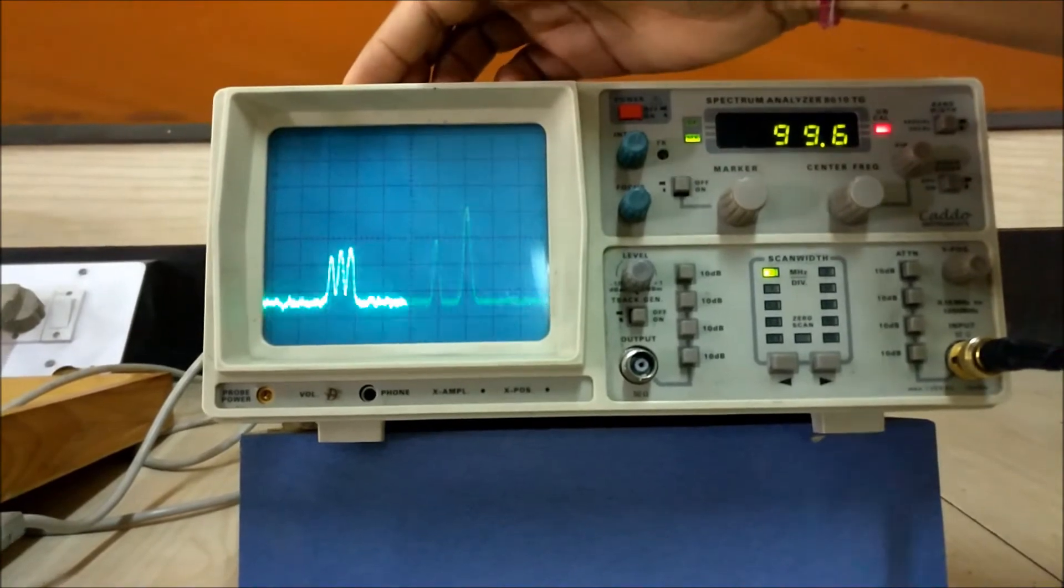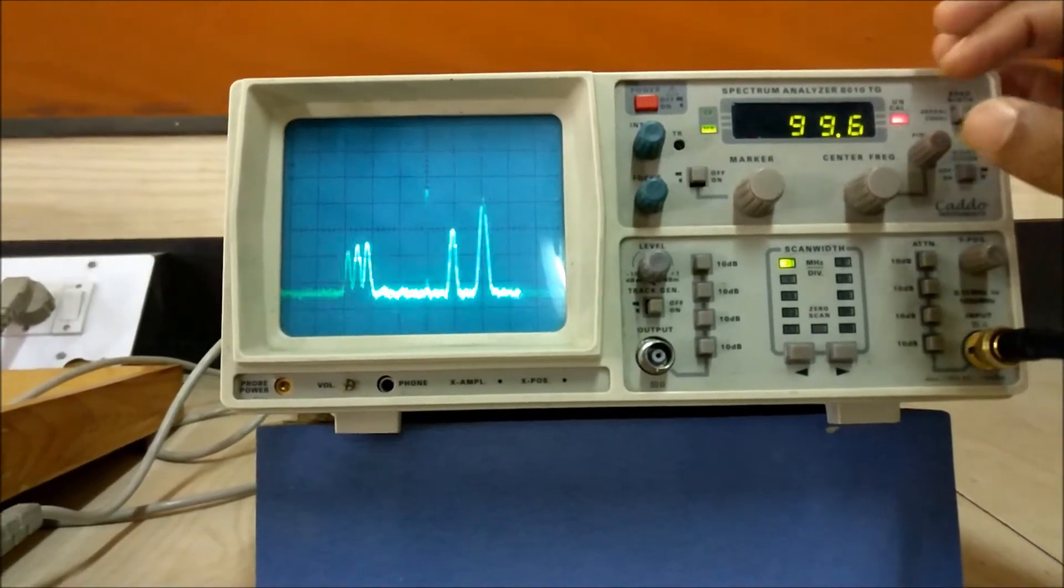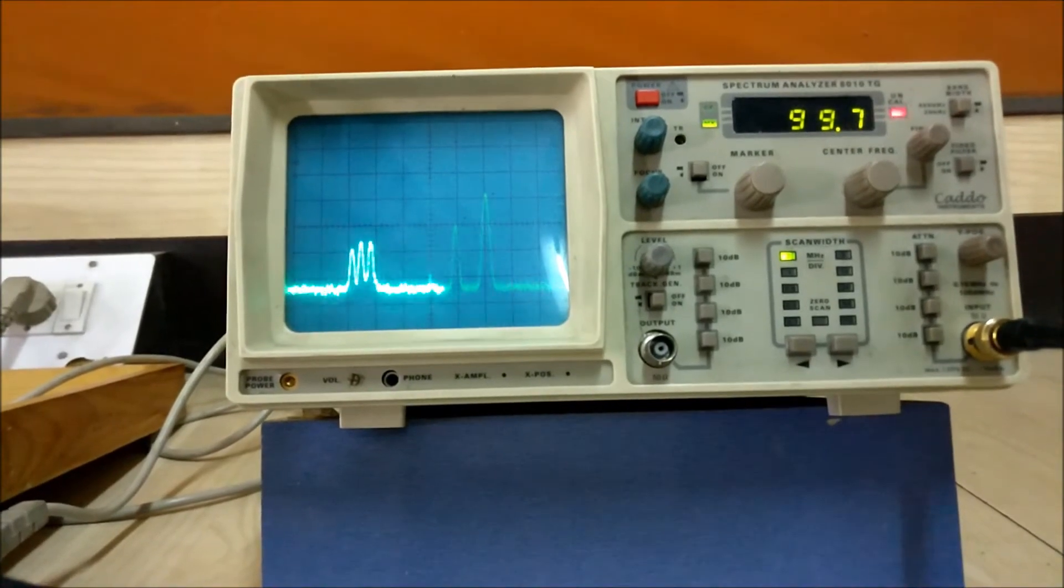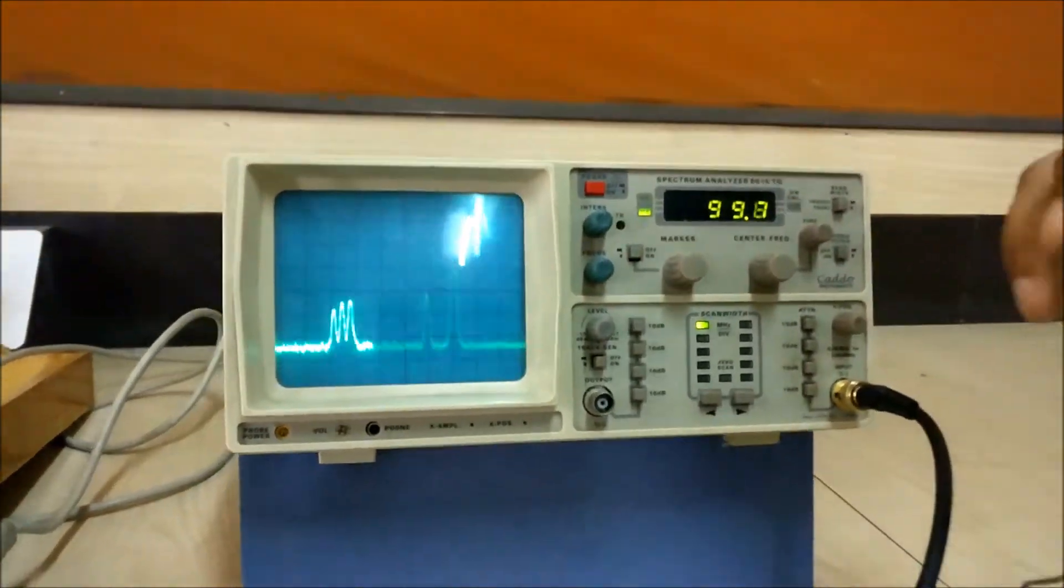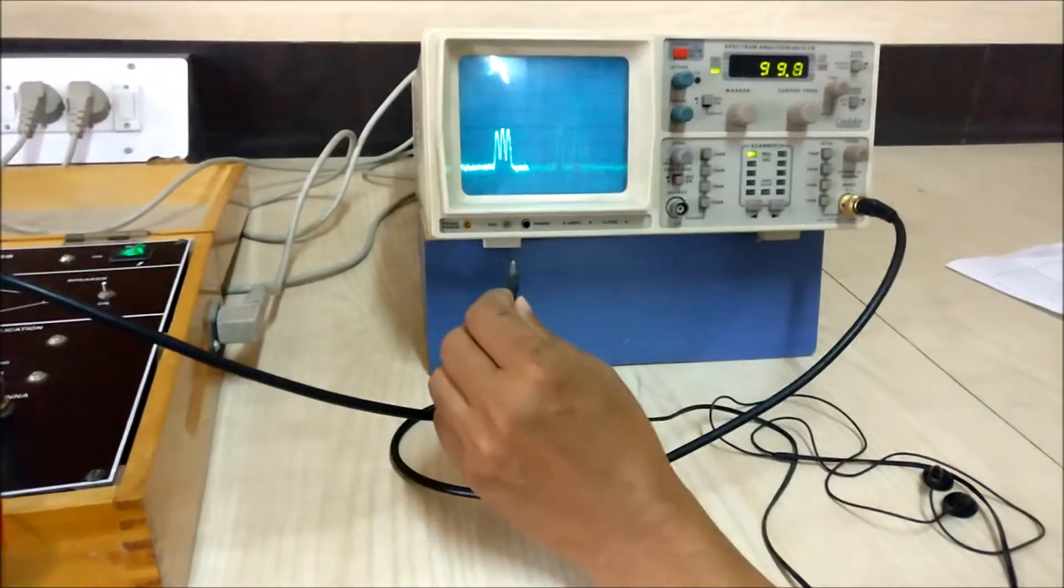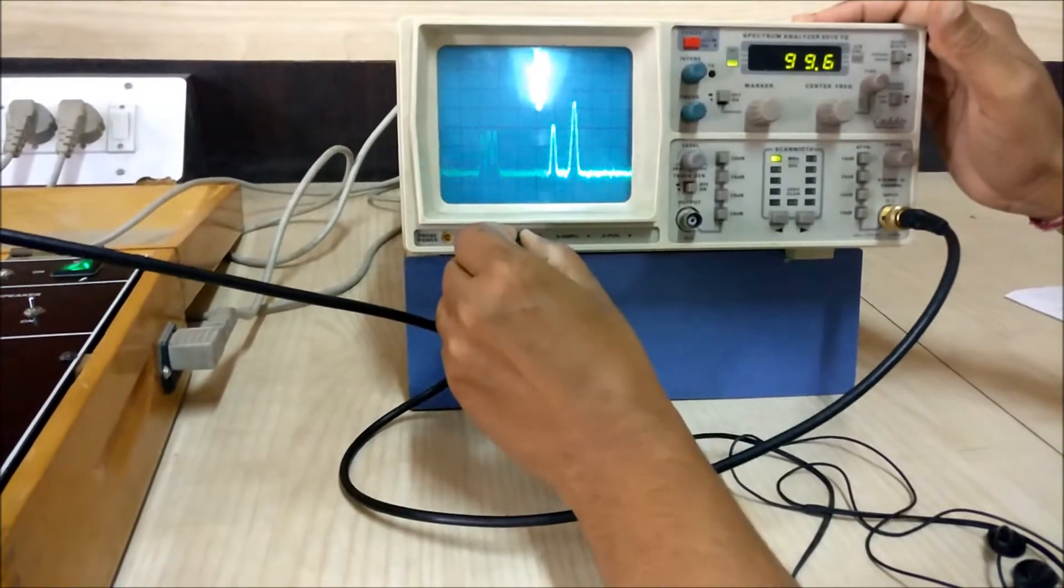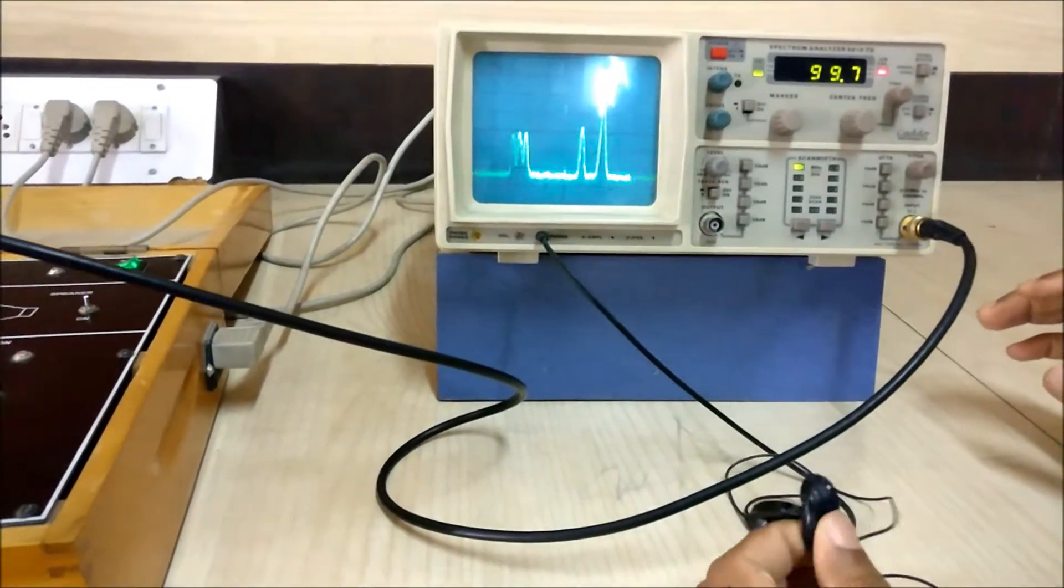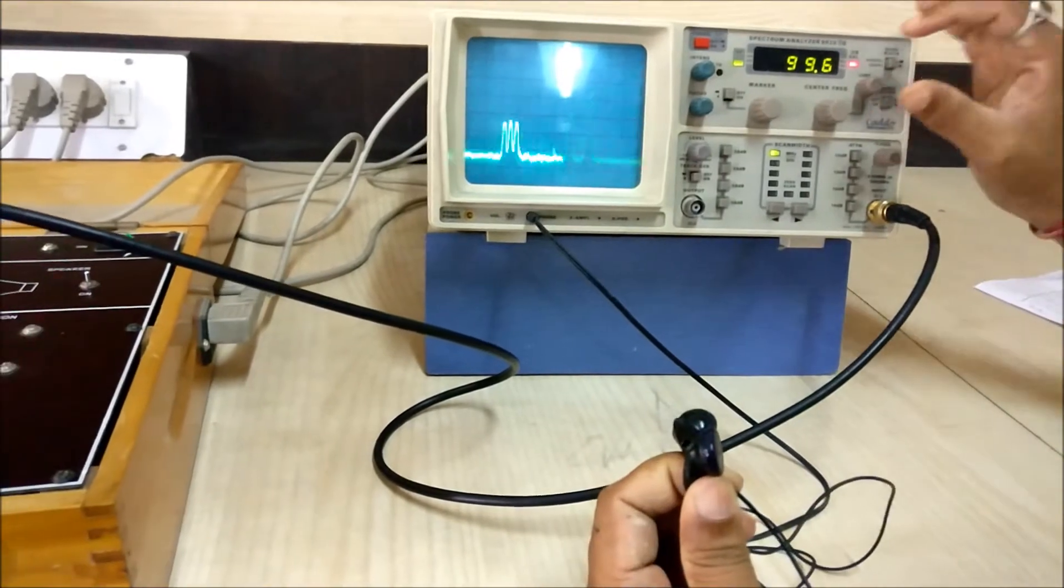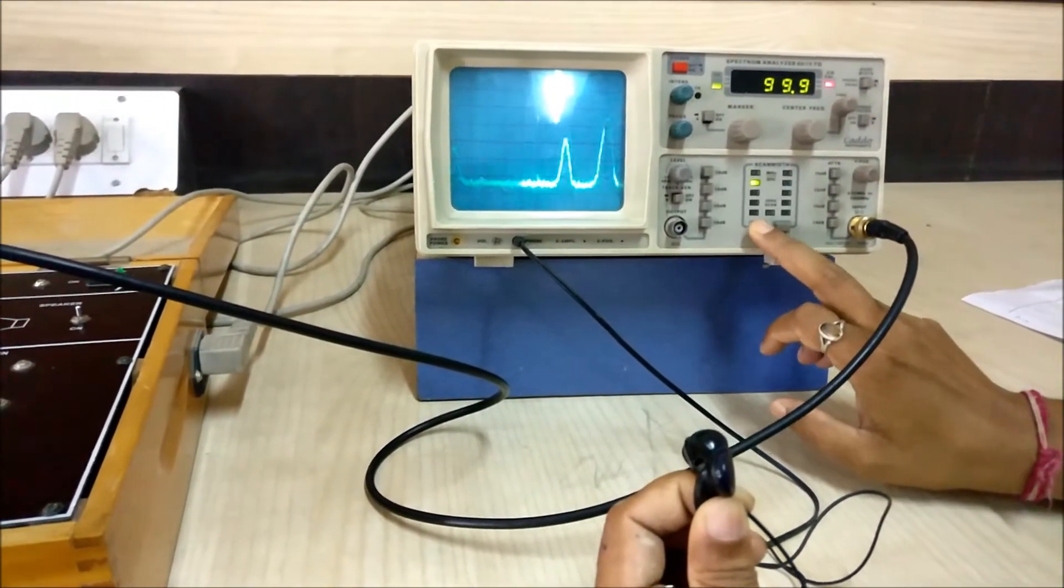So I want to listen to this through a microphone. This is having an earphone, I just connected it to a jack present in the spectrum analyzer. We can see a random signal is coming now. I have to keep the scan width to zero.